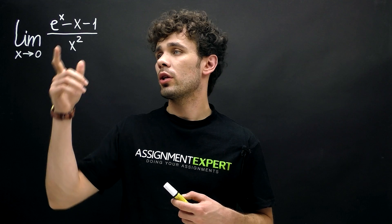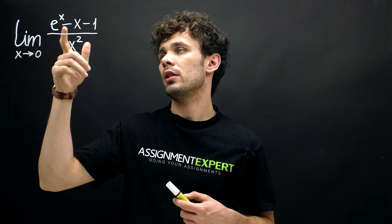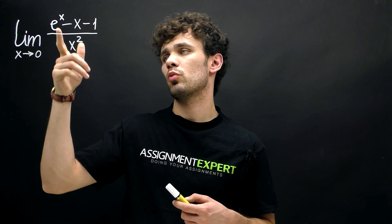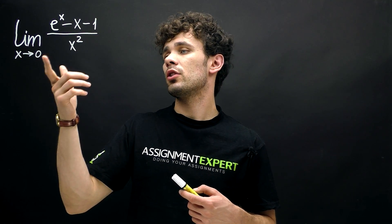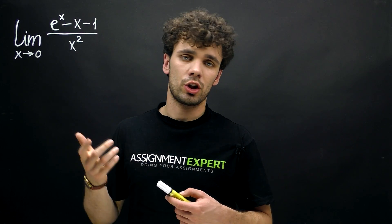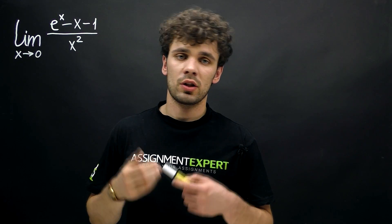If we put zero into our numerator, we will get e raised to the zeros power, which is 1 minus 0 minus 1. So we'll get zero in the numerator and zero in the denominator gives us also zero. So this condition is met.